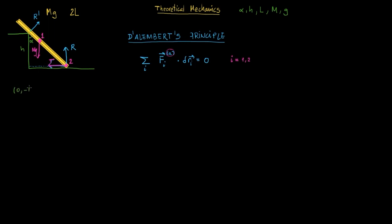We write: (0, -MG) dot product with the virtual displacement of R1 — meaning this point — plus (-G, 0) dot product with the virtual displacement of point 2 — this point — equals zero.